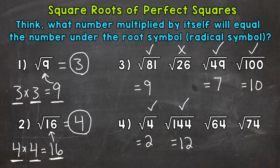Now we have the square root of 64. 8 times 8 equals 64, so this is a perfect square, and the square root of 64 equals 8. Then lastly, we have the square root of 74. This is not a perfect square, so we're not going to get a whole number answer. The square root of 74 is going to be somewhere between 8 and 9, because 8 squared equals 64 and 9 squared equals 81. This is not a perfect square.